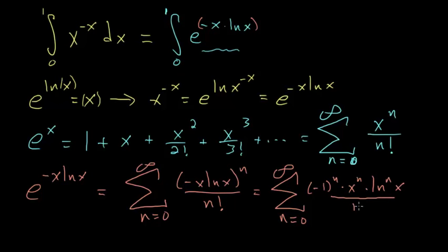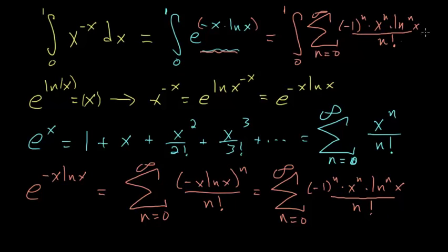So let's put this expression into our integral, where we see this expression. So it's equal to the integral of 0 to 1 of the sum from n equals 0 to infinity of minus 1 to the n times x to the n times the nth power of the natural log of x divided by n factorial times dx.